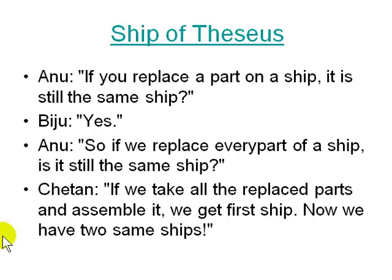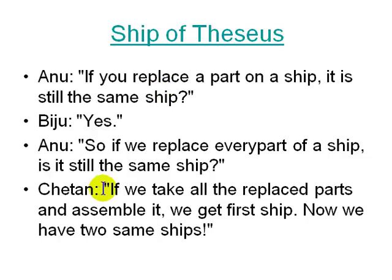There is another paradox called the Ship of Theseus. If you replace one part of a ship, it is still the same ship. But if you replace every part, and then reassemble all the replaced parts, you now have two ships that are both 'the same ship' — that's the paradox. There is a similar paradox in topology called the Banach-Tarski paradox, where you have one ball and can make two balls out of it, though that is a topological example.